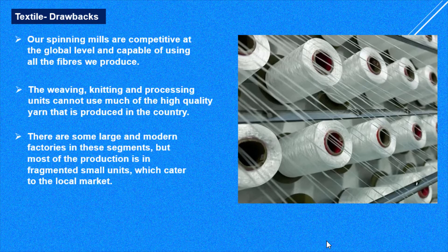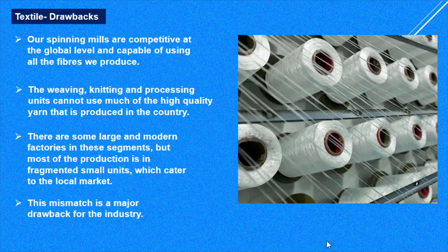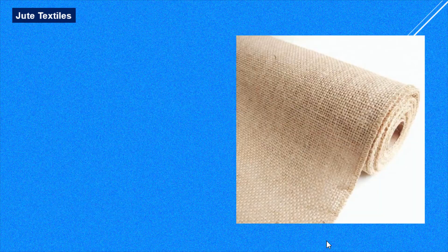There are some large and modern factories in this segment, but most of the production is in fragmented small units which cater to local markets — small scale industries with 5, 10, or 15 power loom machines. This mismatch is a major drawback for the industry. Our next industry is jute textiles.